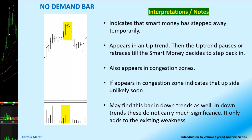It appears in an uptrend, and then the uptrend pauses or retraces until the smart money decides to step back in. It also appears in a congestion zone — if it appears there, it indicates that upside is unlikely very soon. We may find this bar in a downtrend as well, but in a downtrend these do not carry much significance; it only adds to the existing weakness.